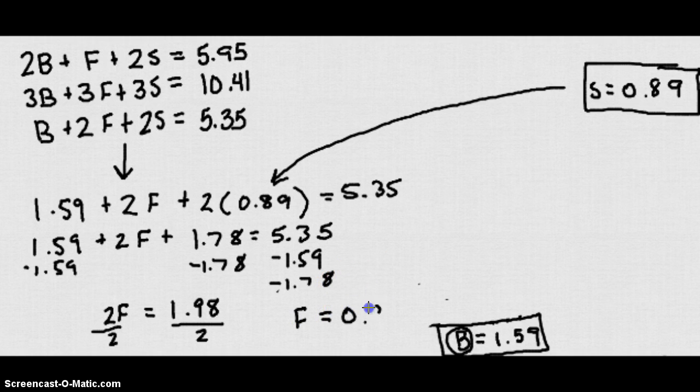2F is equal to 1.98 and let's divide both sides by 2. We get F equals 99 cents, so a fry costs 99 cents. So those are our three answers: the soda cost 89 cents, the fries cost 99 cents, and the burgers cost $1.59.